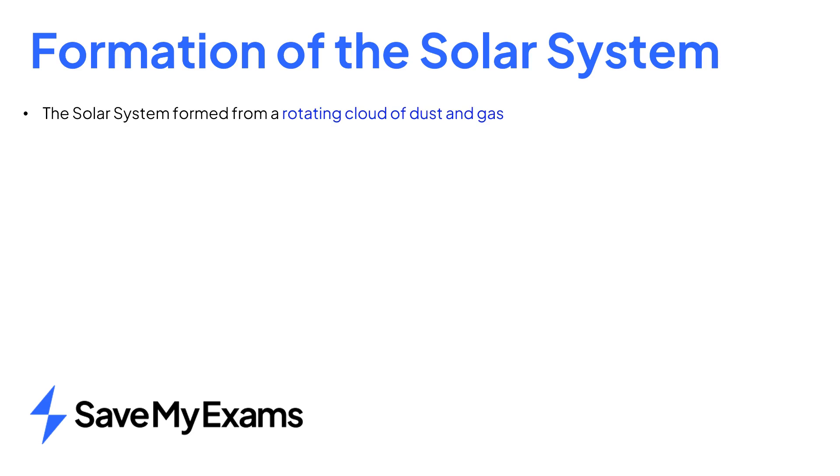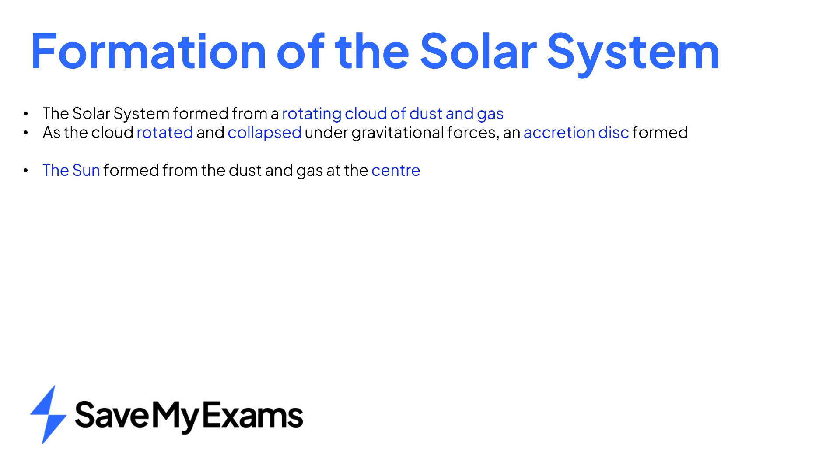In summary, the solar system formed from a rotating cloud of dust and gas. Gravity caused the cloud to flatten into a spinning accretion disk. Most of the mass was concentrated at the centre where the sun formed. The remaining mass became the planets and the other objects in the solar system.